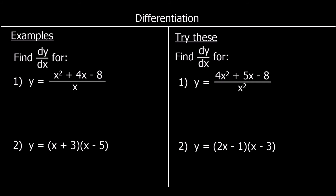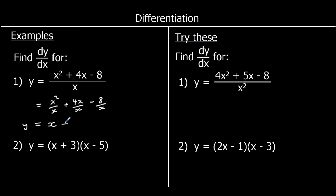Here we've got another set of questions where we need to rearrange before we can differentiate. The first one: y equals x squared plus 4x minus 8, all over x. We need to divide each term by x before we can differentiate. So this is the same as x squared over x, plus 4x over x, minus 8 over x. x squared over x: dividing indices means we take away the powers, 2 take away 1 is 1, so it's just x. 4x over x — the x's cancel — it's just 4. And 8 over x: one over x is x to the power of negative one, so we've got minus 8x to the power of negative one.